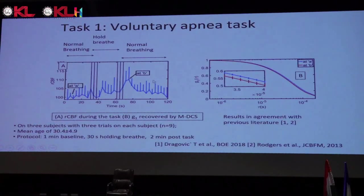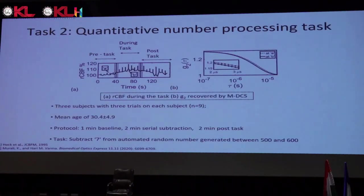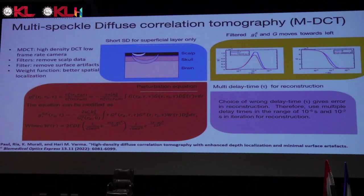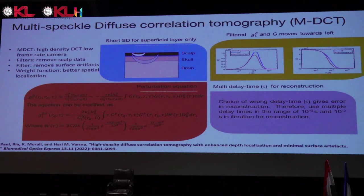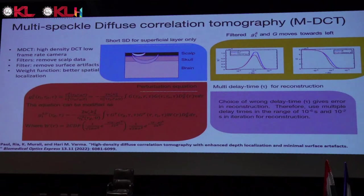We performed two tasks: a voluntary apnea task — asking the subject to hold their breath — to see whether we detect CBF changes, and a quantitative number-processing cognitive task to see whether there are associated CBF changes — which we found. A major question from the community is: are you measuring from the scalp or the brain? It's a mix — there is crosstalk from the scalp. What we see is the surface cortical region; it can penetrate the scalp and skull and reach the cortical region, but not deeper brain regions.